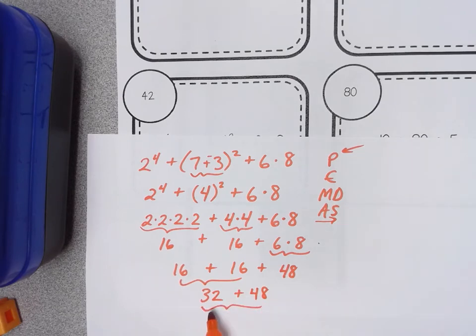32 plus 48. Well 32 plus 40 would get me 72 plus 8 more. Sounds like it would get me 80. Looks like my answer is 80.